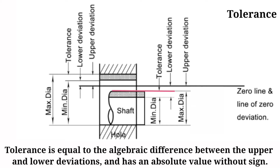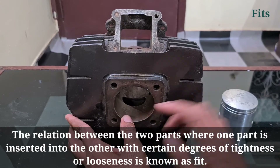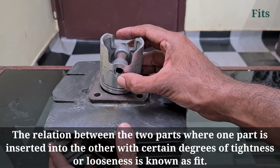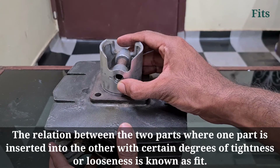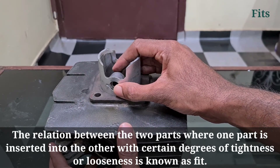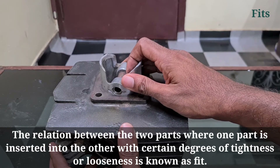Tolerance is the difference between the maximum limit and the minimum limit, and it is an absolute value. Fits. A relation between two parts where one part is inserted into the other with certain degrees of tightness or looseness is known as fits.